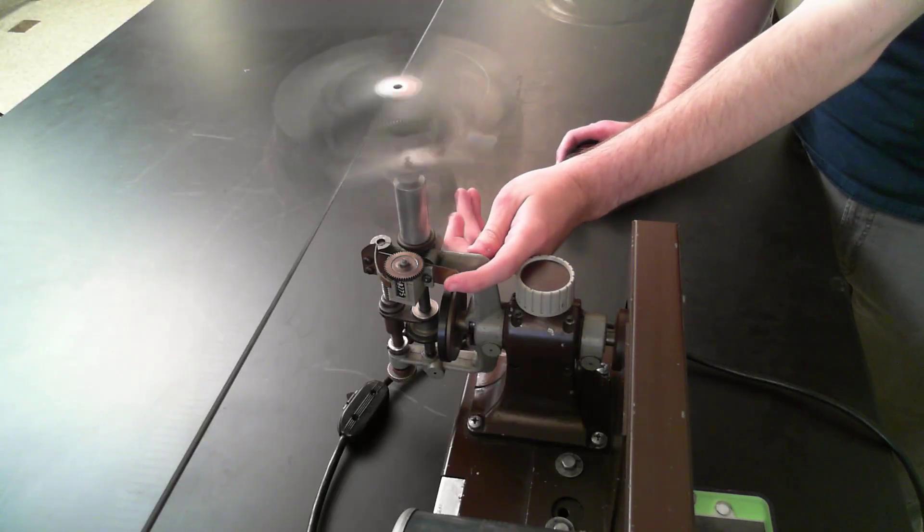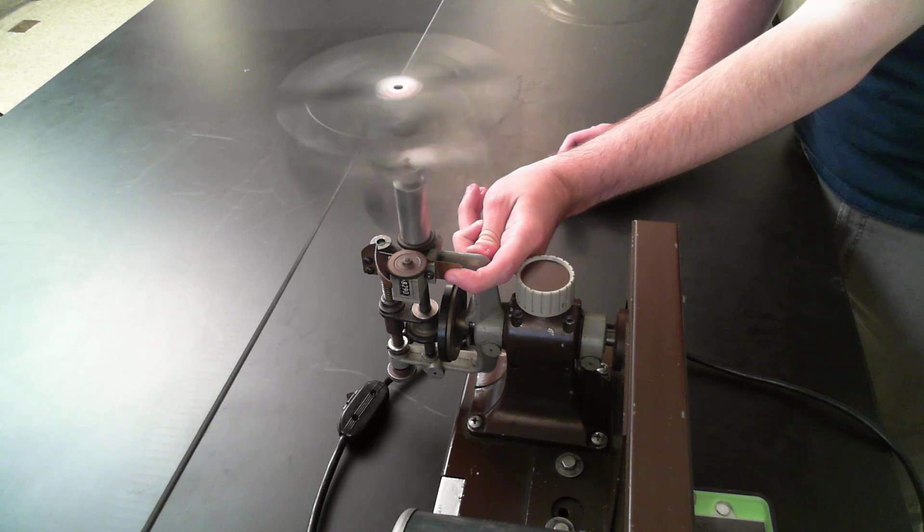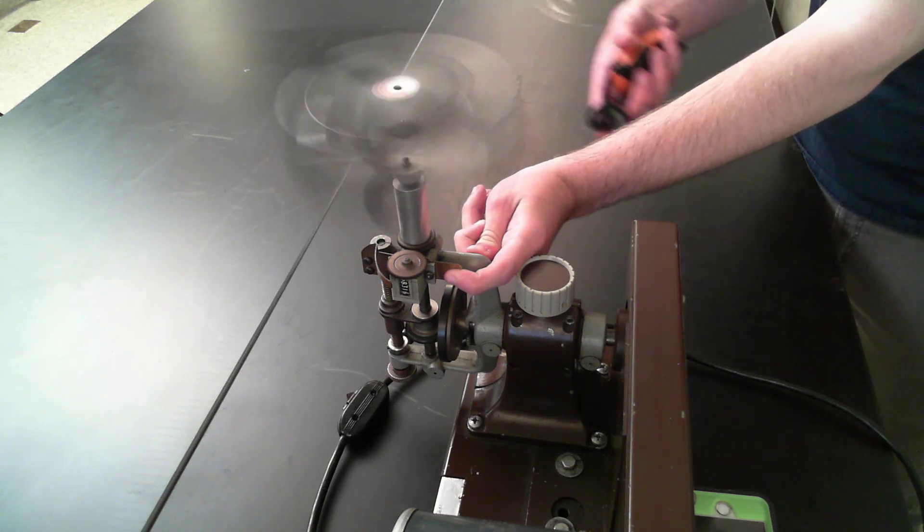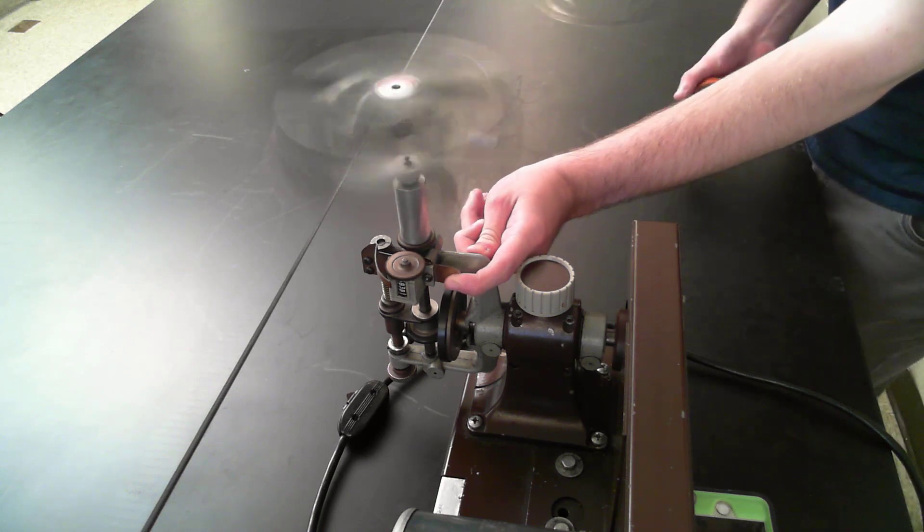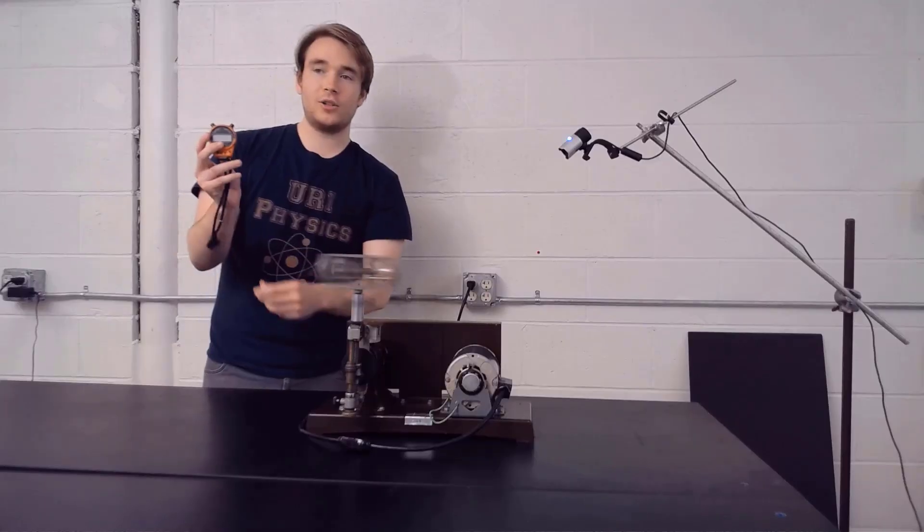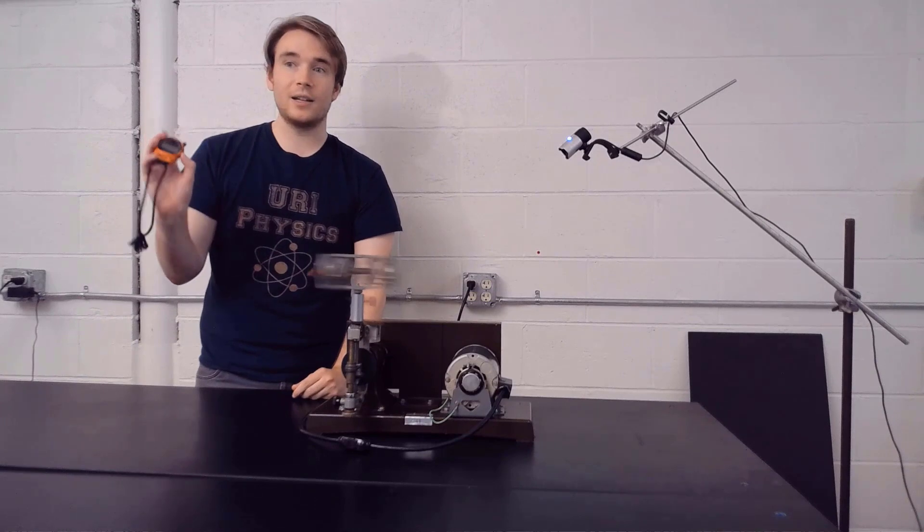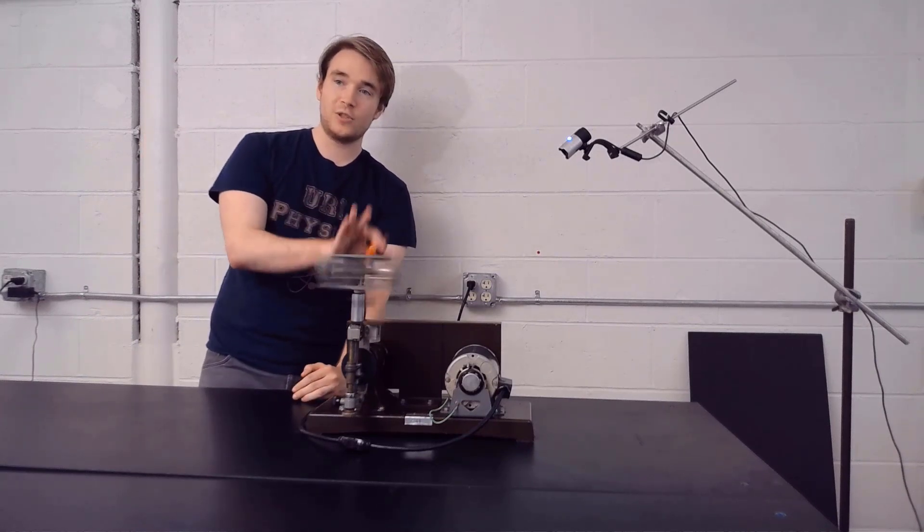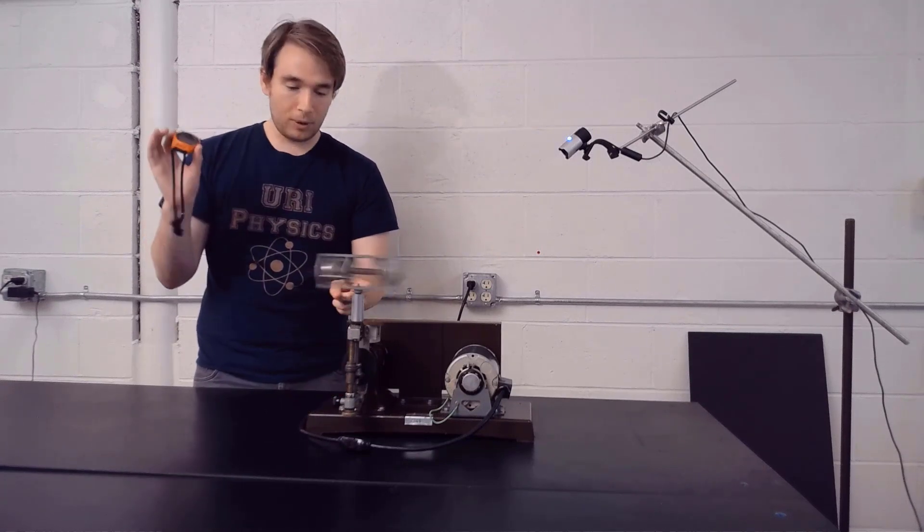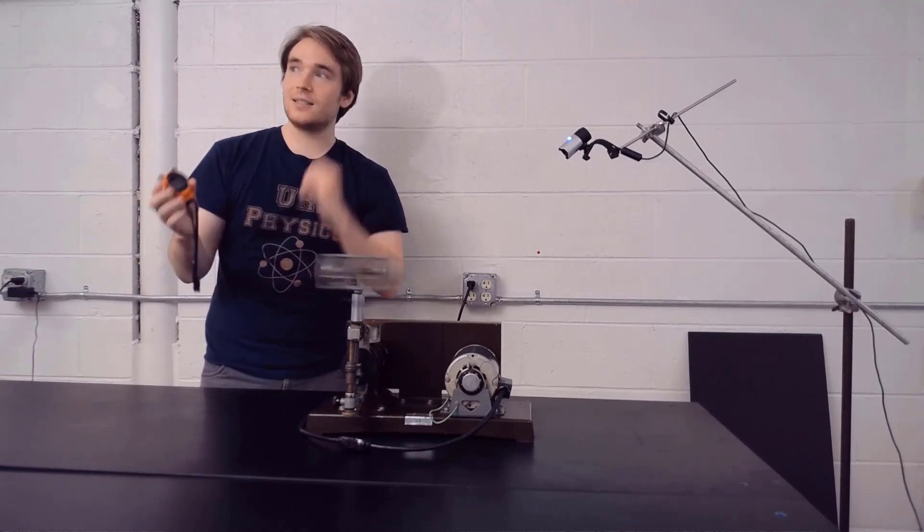On the side here we have a little counter. If you push inward on the counter it starts to count upward. It counts how many revolutions you're doing of that circular path in a certain amount of time. Experimentally you're going to have a stopwatch set for 10 seconds.